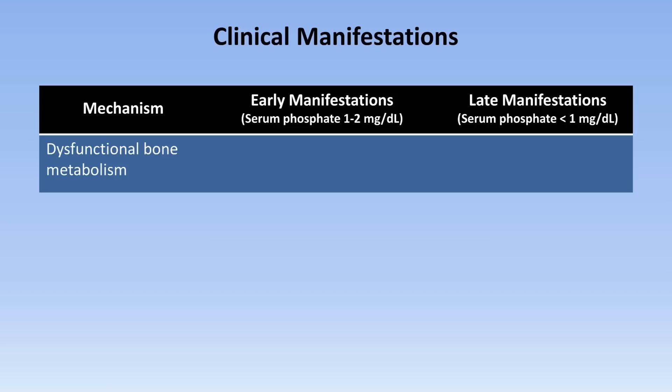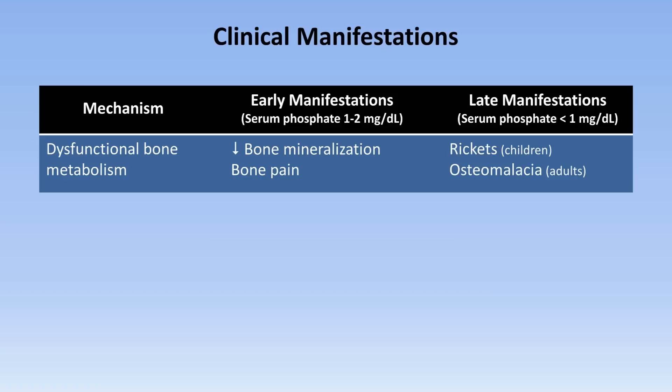The first mechanism is dysfunctional bone metabolism. Early manifestations include decreased bone mineralization and bone pain. Late manifestations in children include phosphopenic rickets, and in adults, osteomalacia.